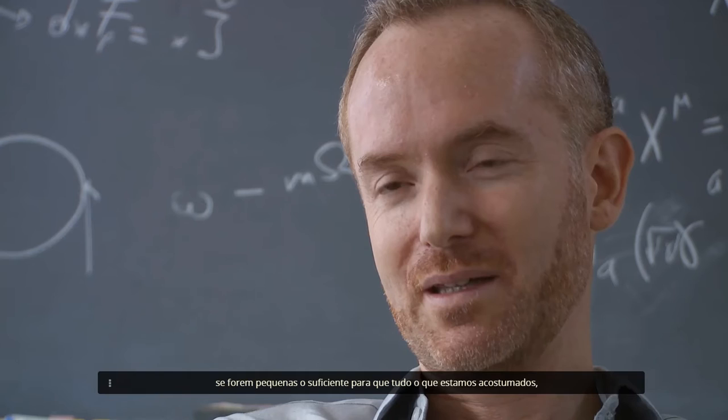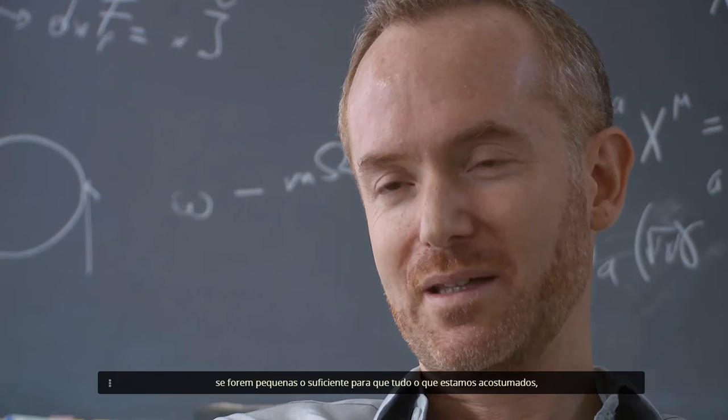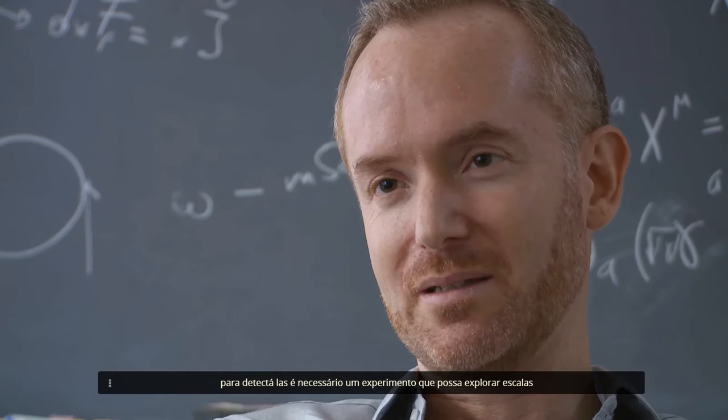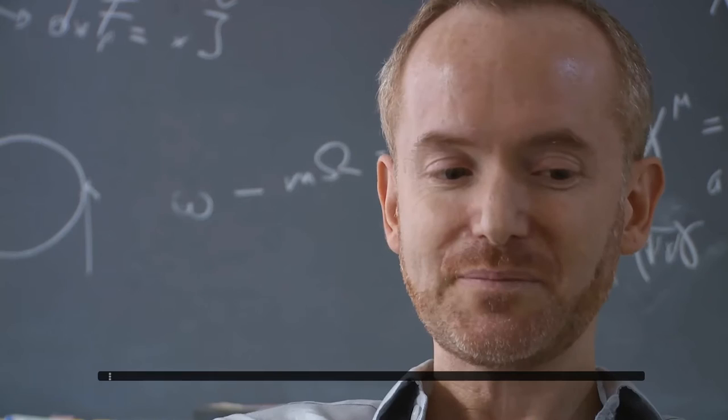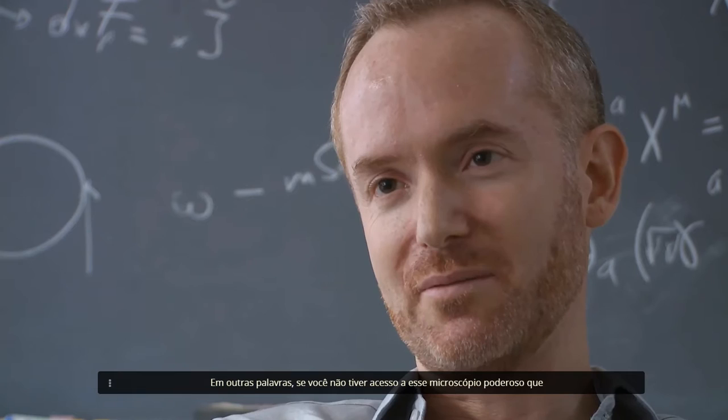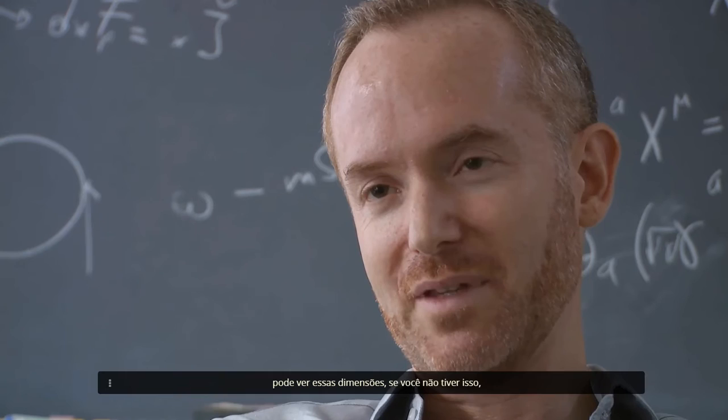Essentially, if those six dimensions are curled up, if they're small enough, that everything that we're used to, including ourselves, fills those dimensions uniformly. And in that case, you just don't even notice they're there. To detect them requires an experiment that can probe very, very short length scales about the size of these dimensions. But depending on, there's many choices you make when you compactify these dimensions. And depending on how you do it, you get different laws of physics at larger distance scales. In other words, if you don't have access to this very powerful microscope that can see down and see those dimensions, if you don't have that, then the physics to you looks very different depending on precisely how those dimensions are curled up.